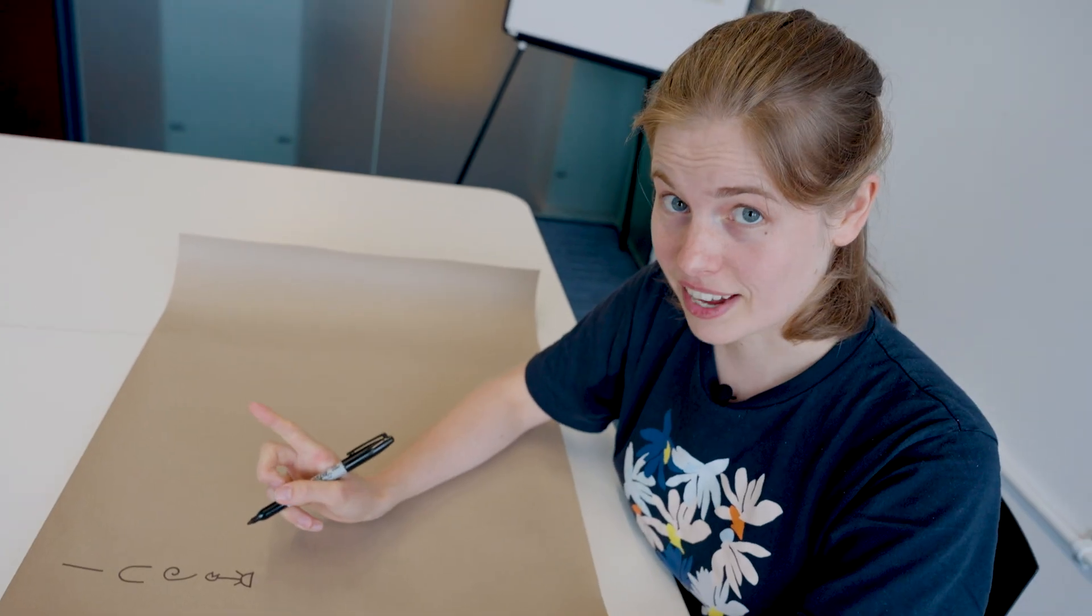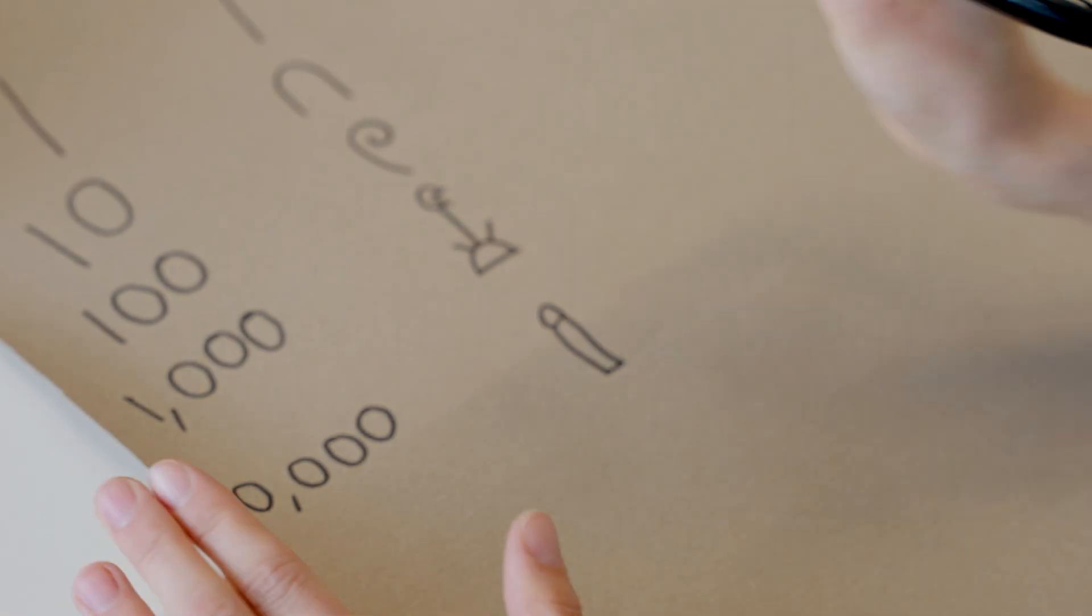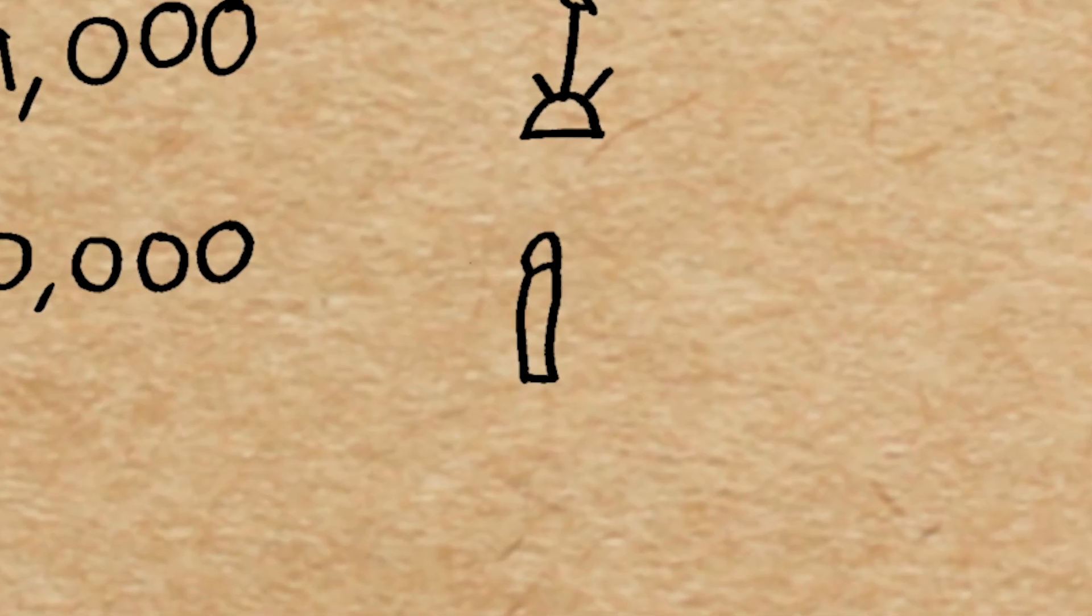For ten thousand? A bent finger. That looks vaguely like this. And that's a bent finger.